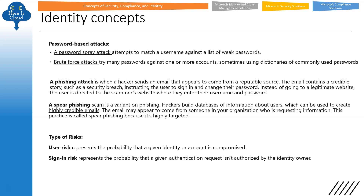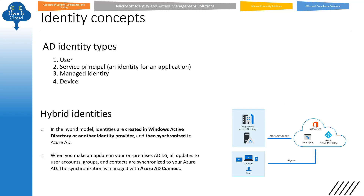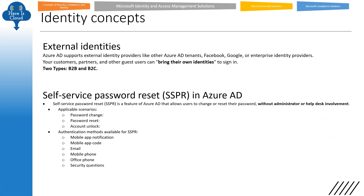Types of risk: user risk represents the problem that a given identity or account is already compromised. Sign-in risk is the probability that a given authentication request isn't authorized by the identity owner — it may or may not be compromised. In sign-in risk, it may not be compromised, but user risk means it's already compromised. There are four AD identity types: user, service principal, managed identity, and guest — you need to remember those. Hybrid identities use Azure AD Connect.